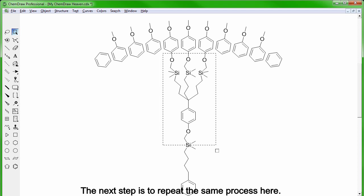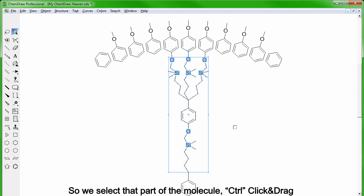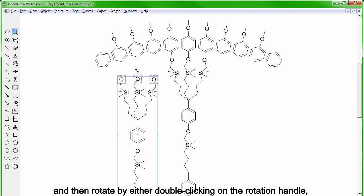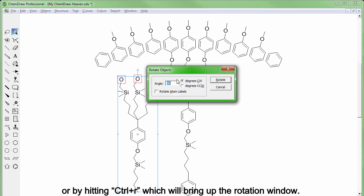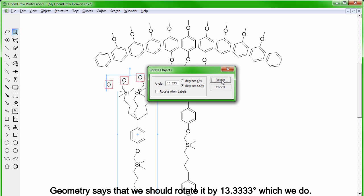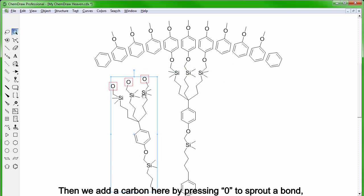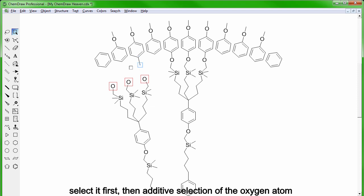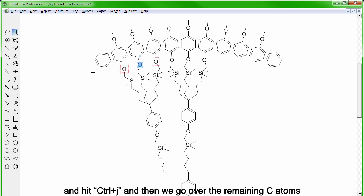Next step is to repeat the same process so we select that part of the molecule, CTRL, click and drag and then rotate by either double clicking on the rotation handle or hitting CTRL-R to bring up the rotation window. Geometry says that we should rotate it by 13.3333 degrees which we do and then we add a carbon here by pressing 0 to sprout a bond, select it first, then additive selection of the oxygen and hit CTRL-J.